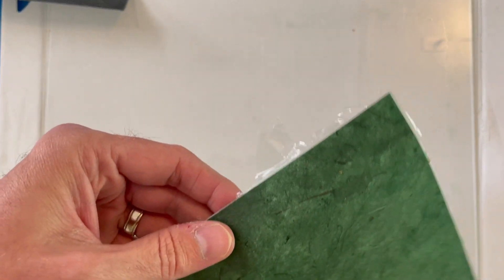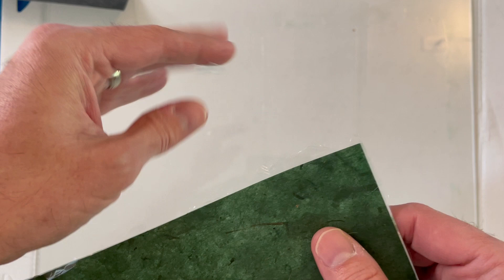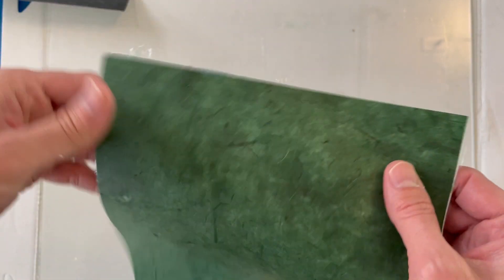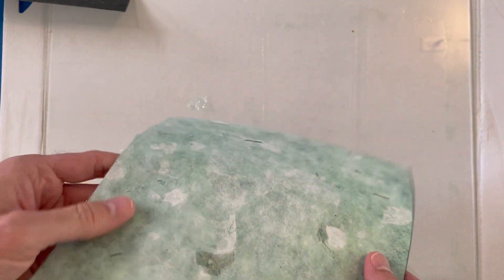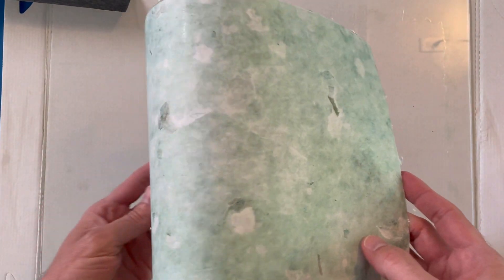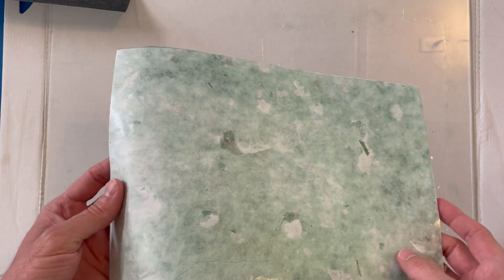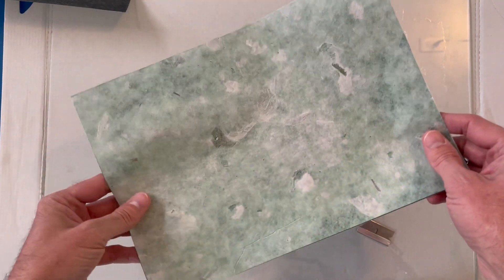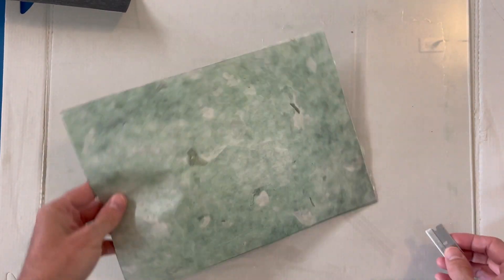The excess methyl cellulose dries to a perfectly clear crust that can just be brushed away. The side of the paper that was facing the glass comes off slightly shiny, and you can take the shine off by wiping the paper very gently with a slightly damp paper towel.